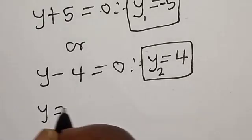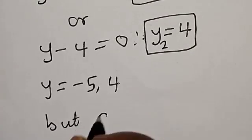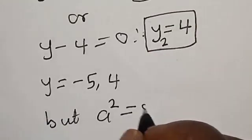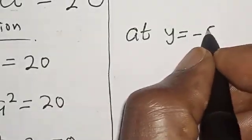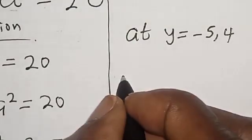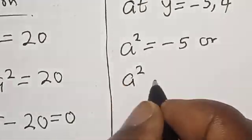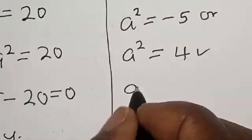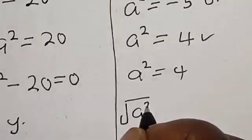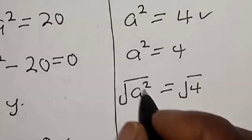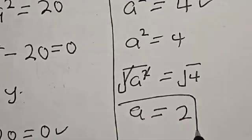Since A square equals Y, we substitute back. A square equals minus 5, or A square equals 4. Let's work with A square equals 4. Taking the square root of both sides: square root of A square equals square root of 4. A is equal to 2. That is the value of A.